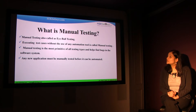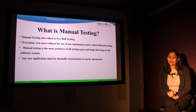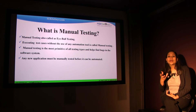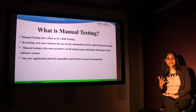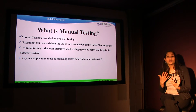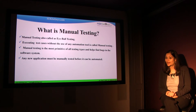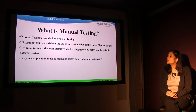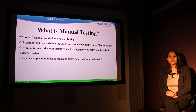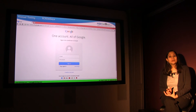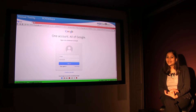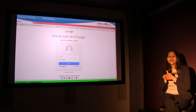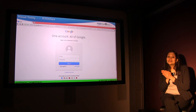Manual testing is also called eyeball testing. The reason why it's called eyeball testing is because we basically look at something physically and say whether it's working or not according to the requirements. Executing test cases without the use of any automation tool is called manual testing. You are physically going to check whether the application is working the way it is supposed to work.